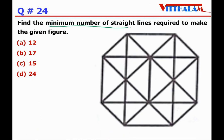Question 24: Find the minimum number of straight lines required to make the given figure. To minimize lines, take the longest possible lines. Counting: first, second, third, fourth, fifth, sixth, seventh, eight lines. Then checking remaining lines: 9, 10, 11, 12, 13, 14, 15, 16, and 17. No more left out. So the answer is 17.